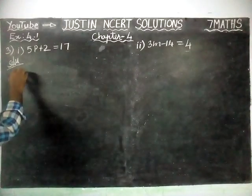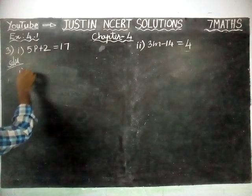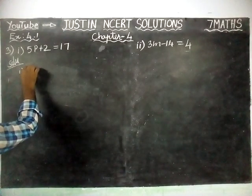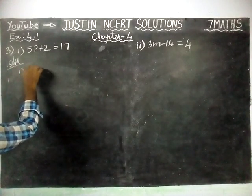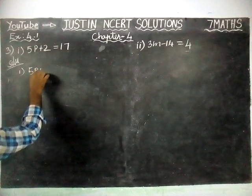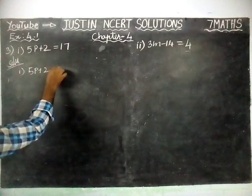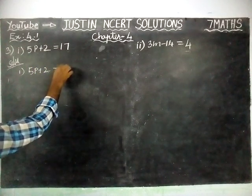First question: 5P plus 2 is equal to 17.